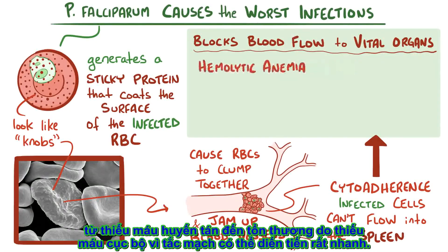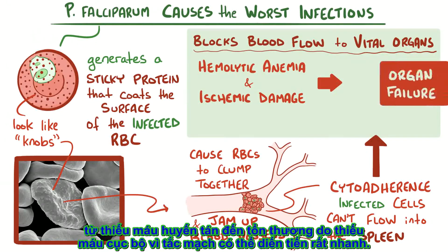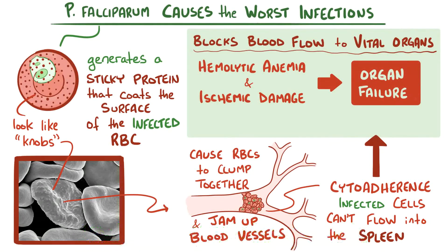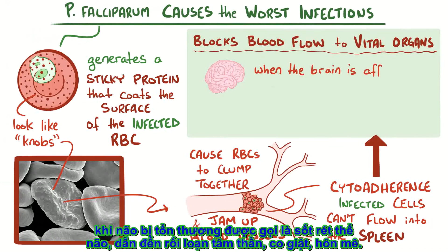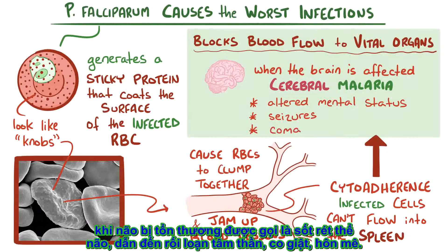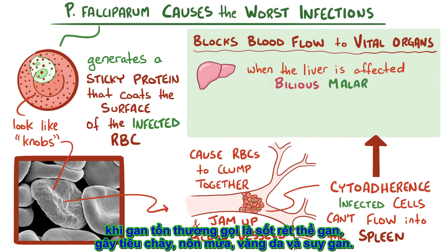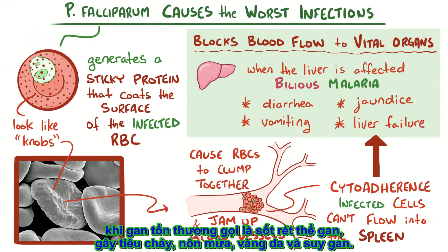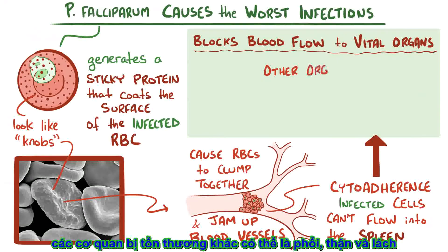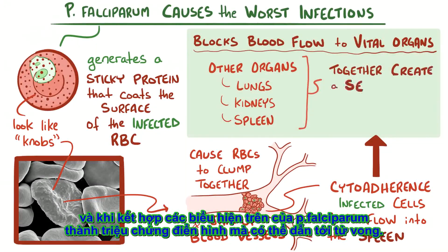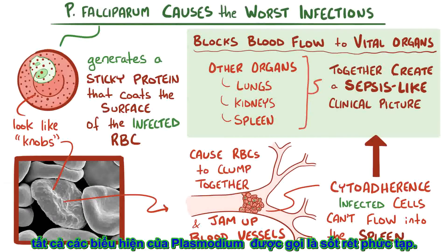Between hemolytic anemia and ischemic damage from blocked blood flow, organ failure can set in pretty quickly. When the brain is affected, it's termed cerebral malaria, and it results in altered mental status, seizures, and coma. When the liver is affected, it's termed bilious malaria, and it results in diarrhea, vomiting, jaundice, and liver failure. Other commonly infected organs include the lungs, the kidneys, and the spleen, which taken together create a sepsis-like clinical picture that can eventually lead to death. Together, all these scenarios are called complicated malaria.